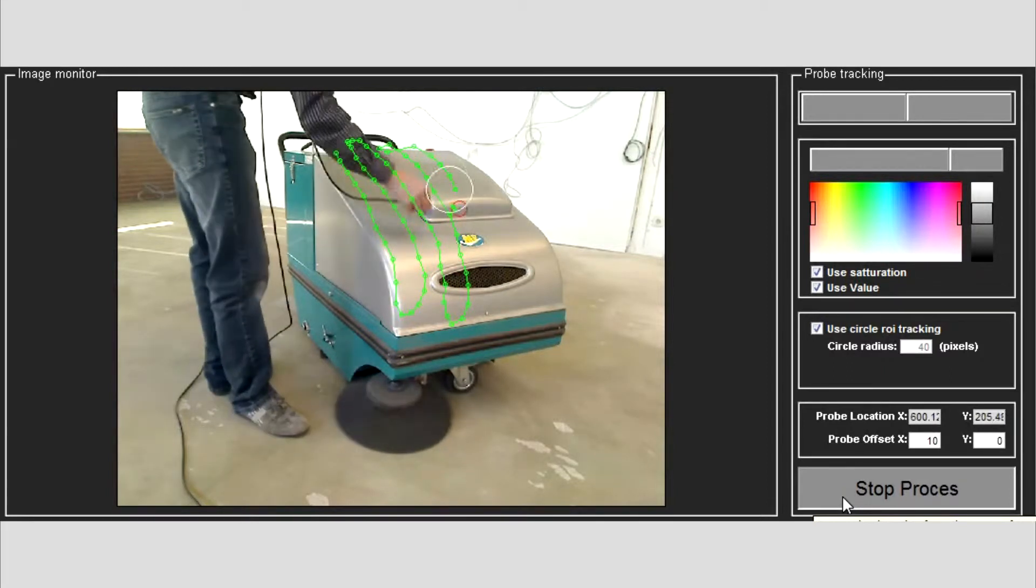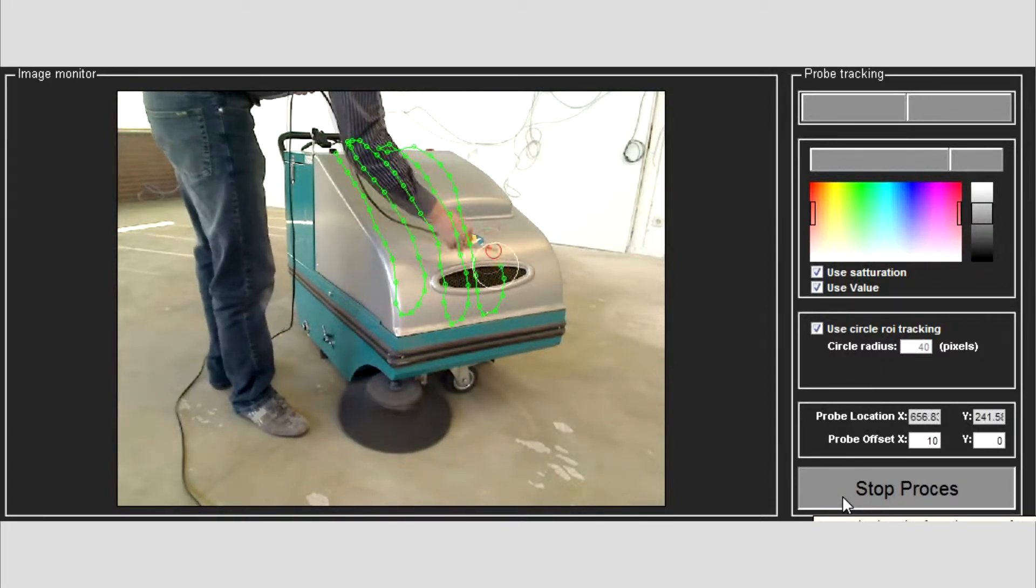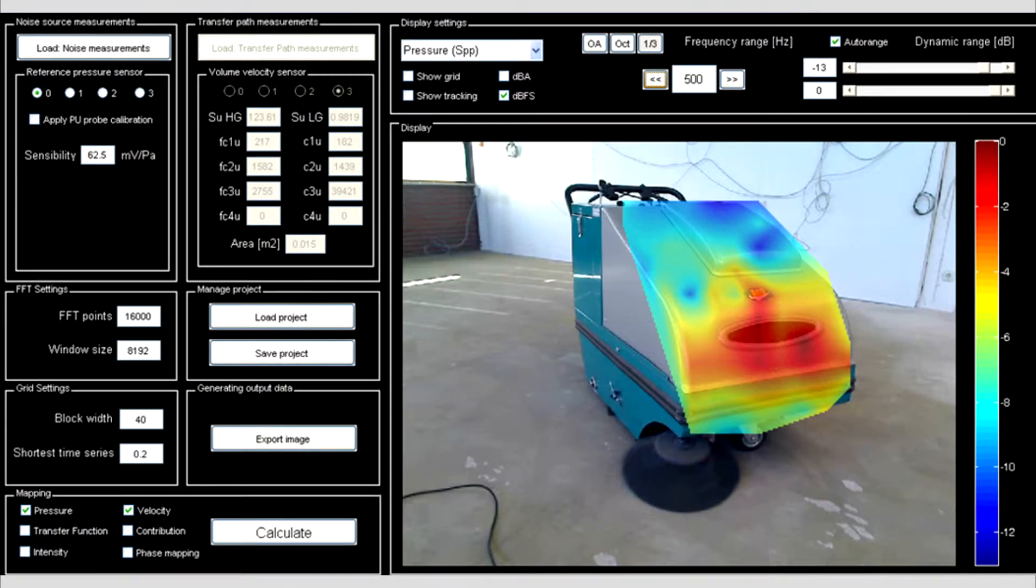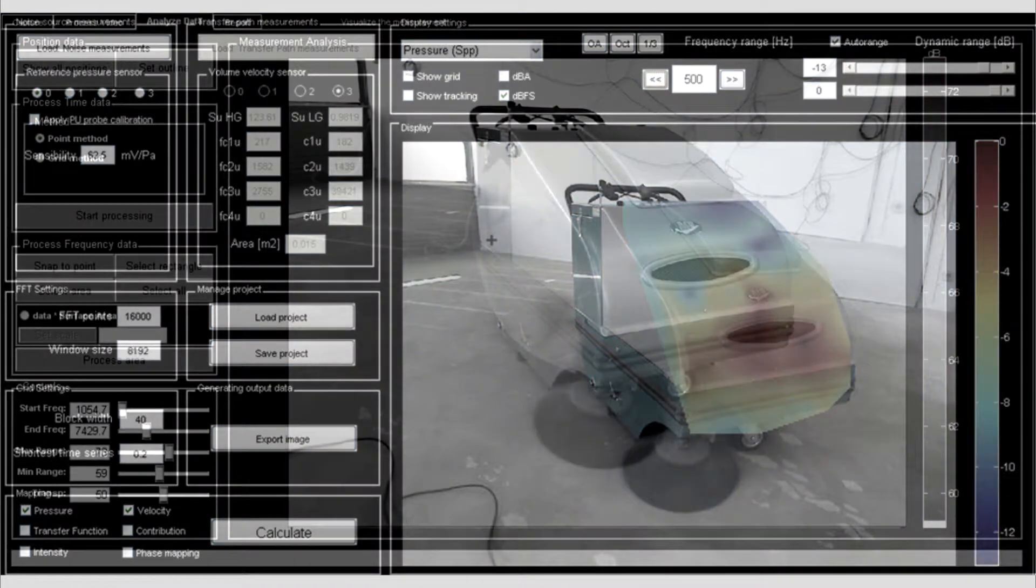At its measurement points, the particle velocity, sound intensity and sound pressure are calculated from the relative time block of the audio data. A high resolution sound core map is produced as a result.